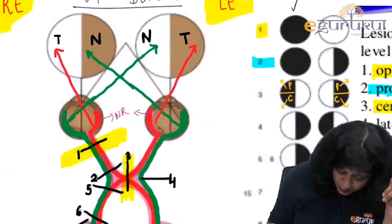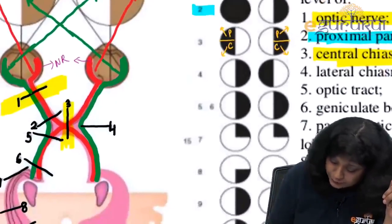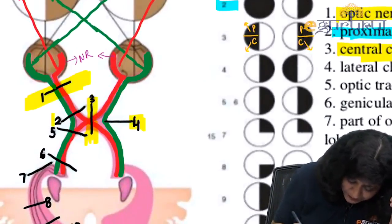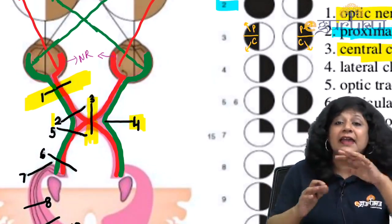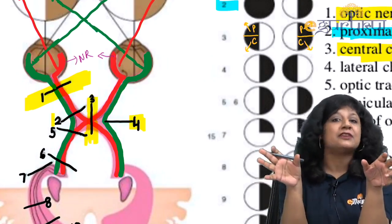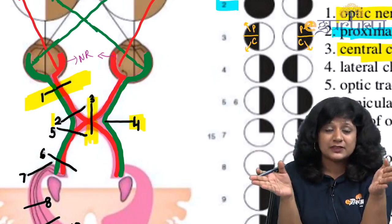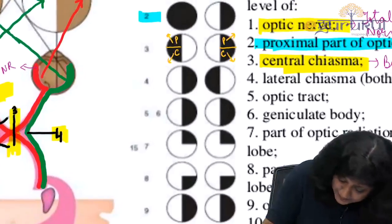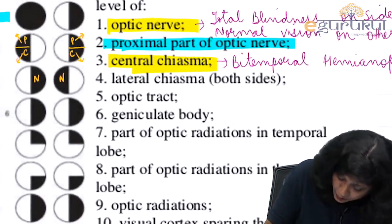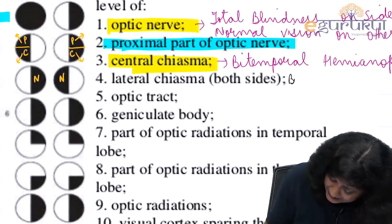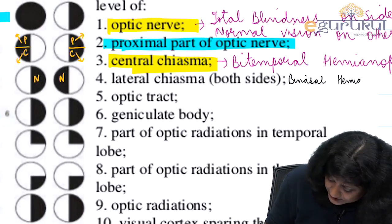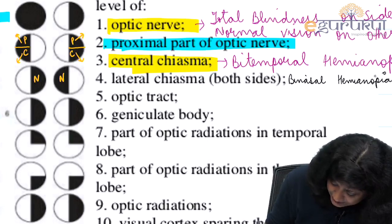The fourth site is the lateral chiasma. Bilateral temporal fibers are affected here. Temporal fibers correspond to the nasal visual field, so both nasal fields are gone — this is called binasal hemianopia.